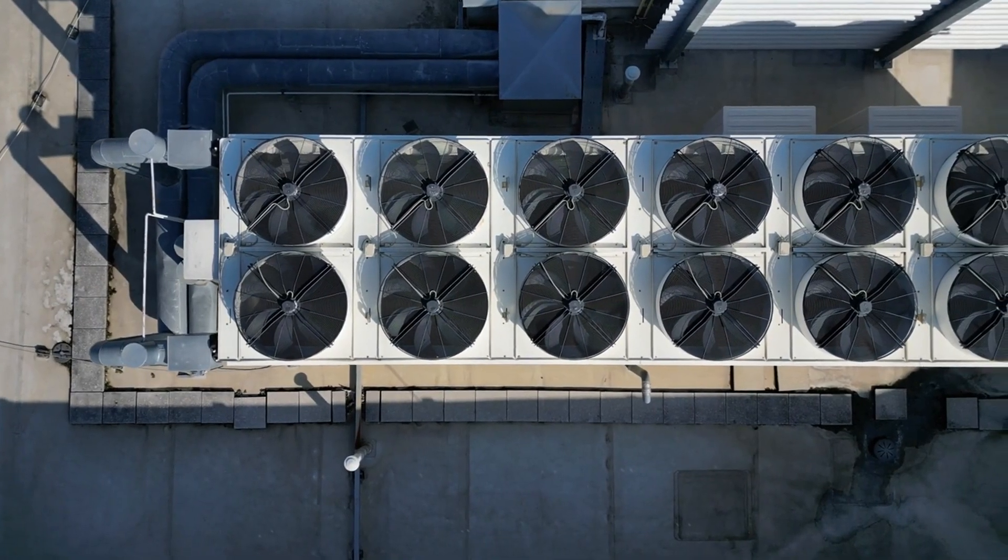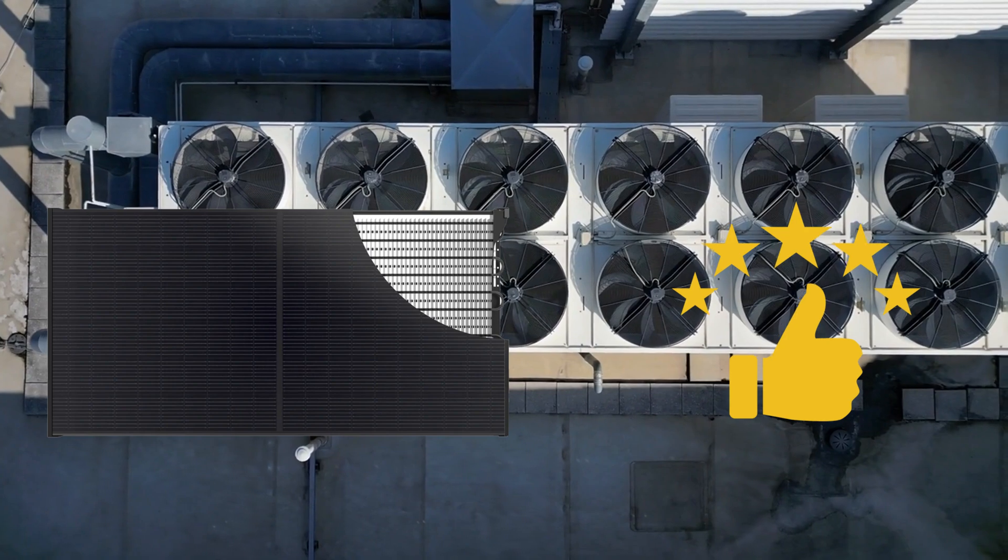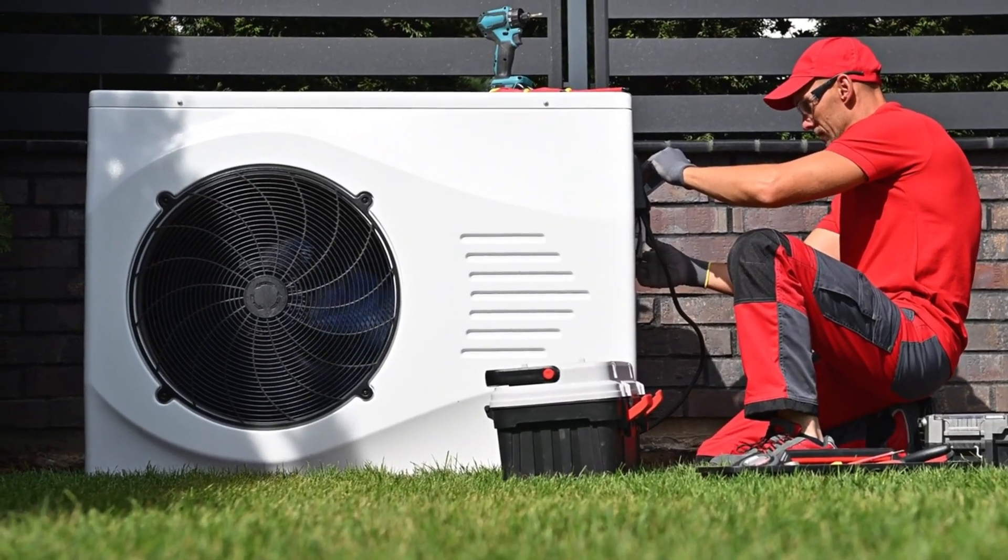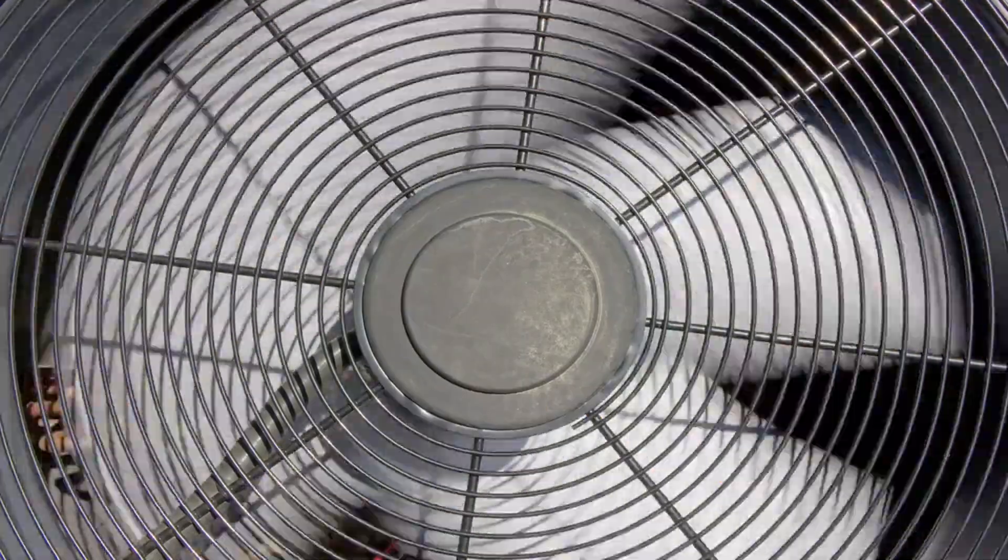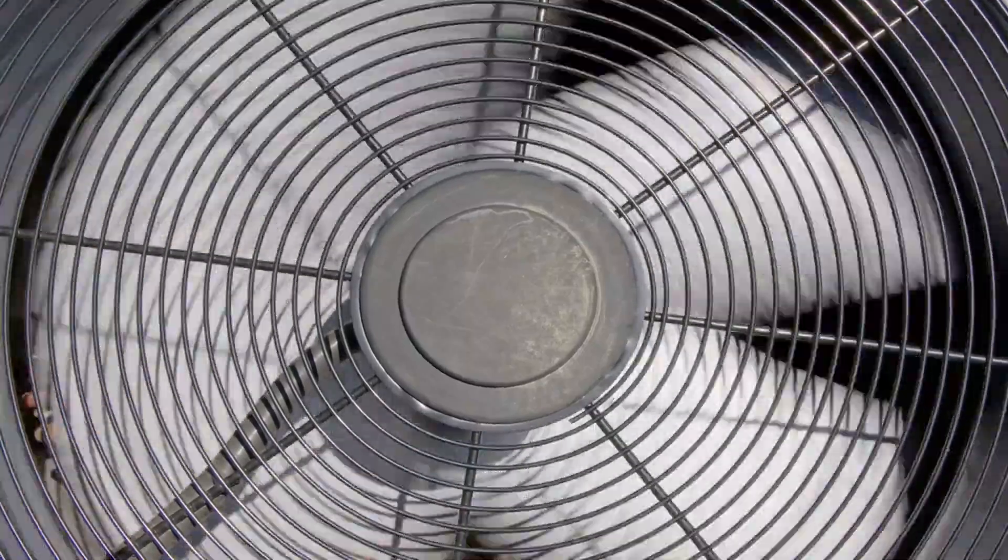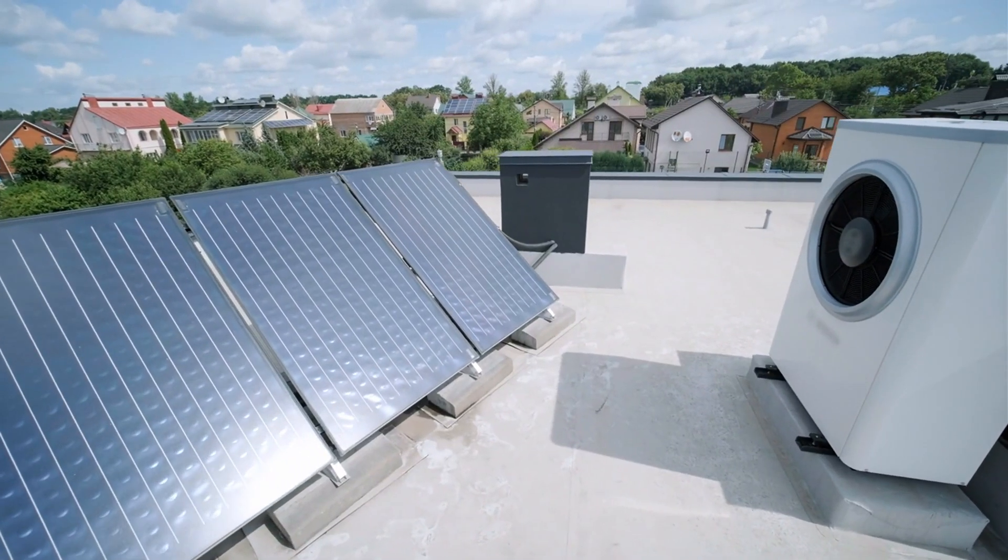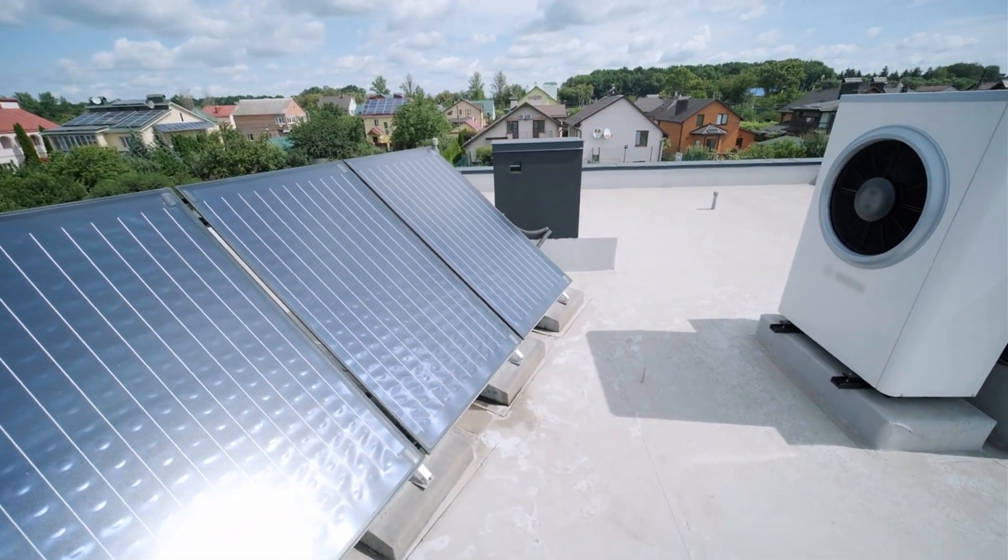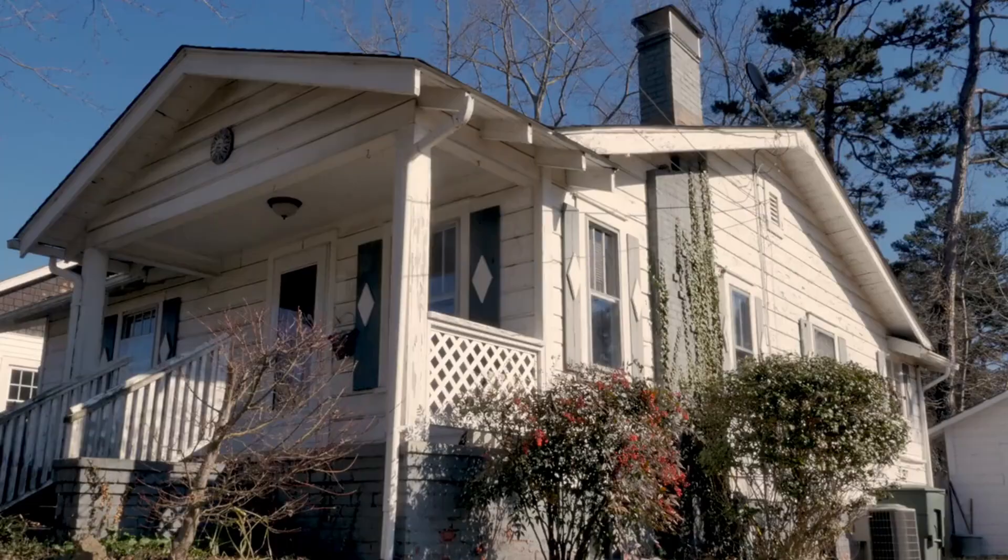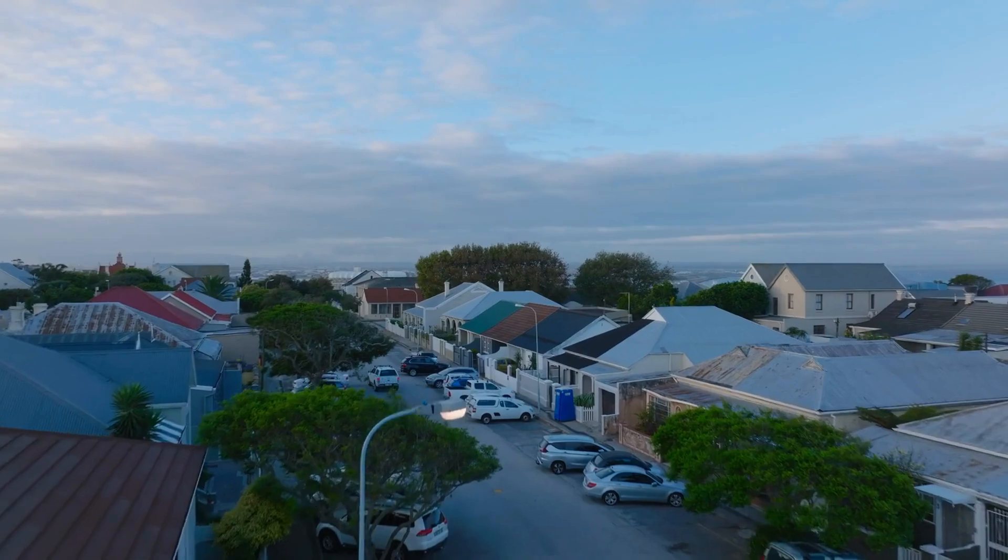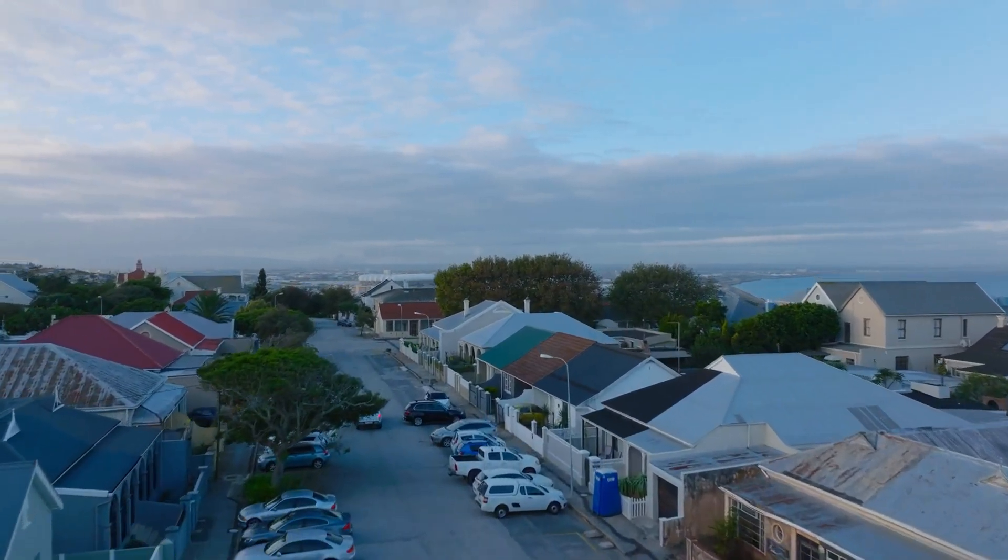Importantly, Solink avoids some of the challenges of other heat pump systems. Unlike ground source heat pumps, it doesn't require drilling or underground loops. And unlike air source heat pumps, it doesn't rely on large noisy outdoor fan units, making it much quieter and more compact. Perfect for dense urban environments. This flexibility also makes it scalable. Whether you're looking at a single family home, an apartment building, or even a small commercial site, Solink can be adapted to suit the project.